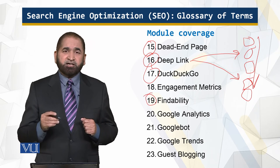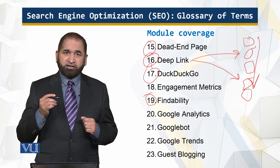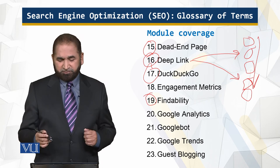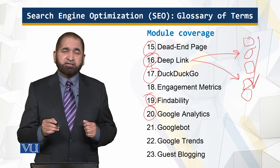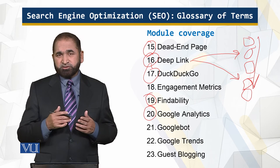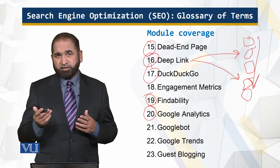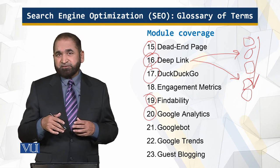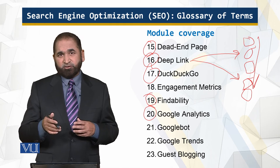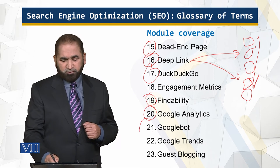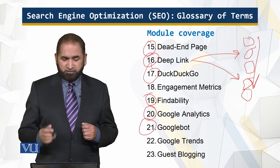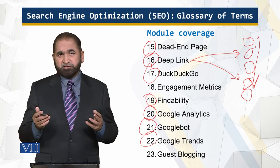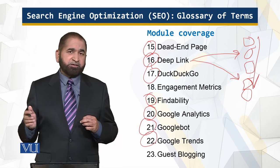Findability is the measure of how easily your page can be found over the internet. Google Analytics is a tool you can use to analyze user behavior when they visit your website, and there is also a Google Analytics certification. Googlebot is Google's crawler. Google Trends is a free analysis service that shows what keywords people are searching for on the internet.